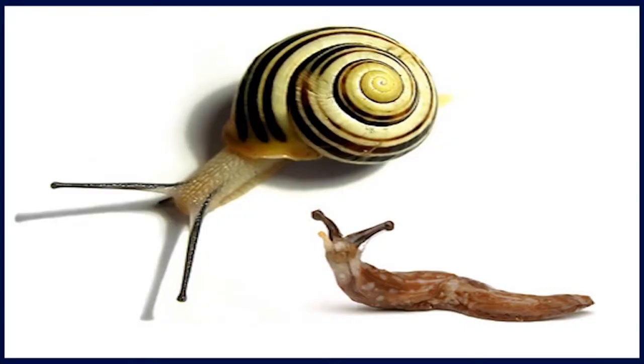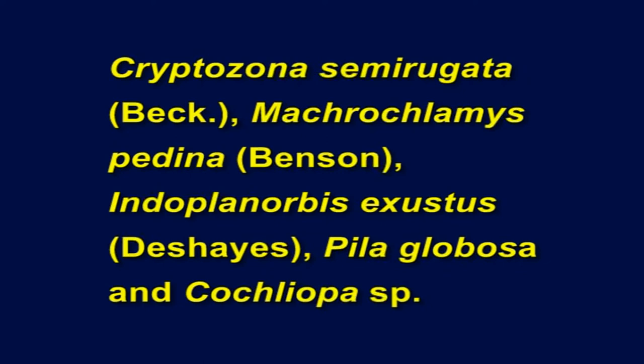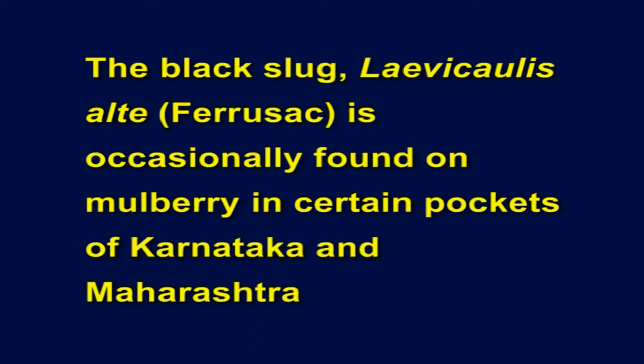Snails and slugs also cause significant damage to mulberry in certain areas where there is high humidity coupled with high organic content in the soil. Among the snails, the giant African snail Achatina fulica fulica Bowditch, land snails Ratchis punctatus Antan, Hariopanta bestialis Beck, Cryptozona semirigata Beck, Macrochlamys pedina Benson, Indoplanorbis exustus Jassus, Pila globosa, and Cochleomia species are reported to be associated with mulberry. Of these, Achatina fulica fulica has been reported as the major devastating pest in some isolated pockets. The black slug Laevicaulis alte Ferusac is occasionally found on mulberry in certain pockets of Karnataka and Maharashtra during rainy and post-rainy months, particularly in close vicinity of irrigation canals and shaded parts of mulberry gardens. The biology and management of important pests of mulberry are detailed below.